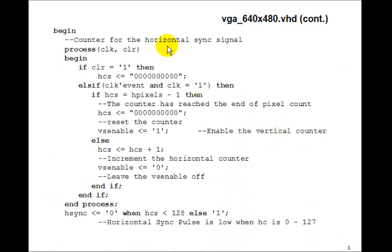So the first thing we need is a horizontal counter. So this is basically a modulo 800 counter, similar to the counters we had before. Asynchronous clear. On the rising edge of the clock if the horizontal counter is equal to h pixels minus 1, that's 800 minus 1, then we reach the end of the pixel count, so we'll reset it to 0. And we'll enable this VsEnable. So this gets enabled for one clock pulse. As we'll see, we'll use this to determine whether we're going to increment the vertical counter or not. Otherwise, we just increment the horizontal counter. Make sure the VsEnable is 0. And that's our modulo 800 counter.